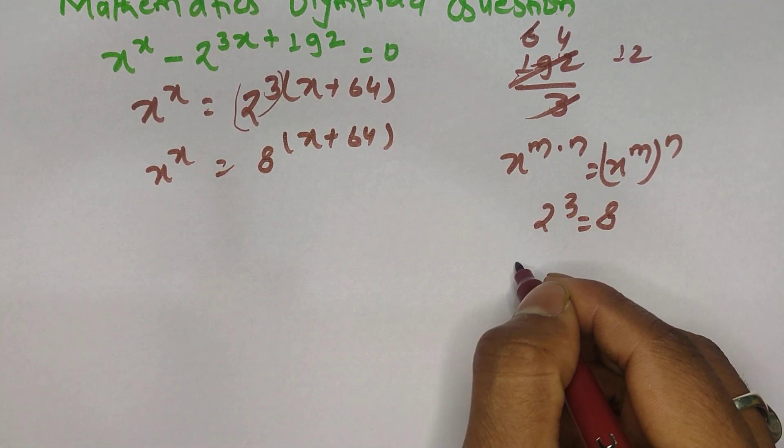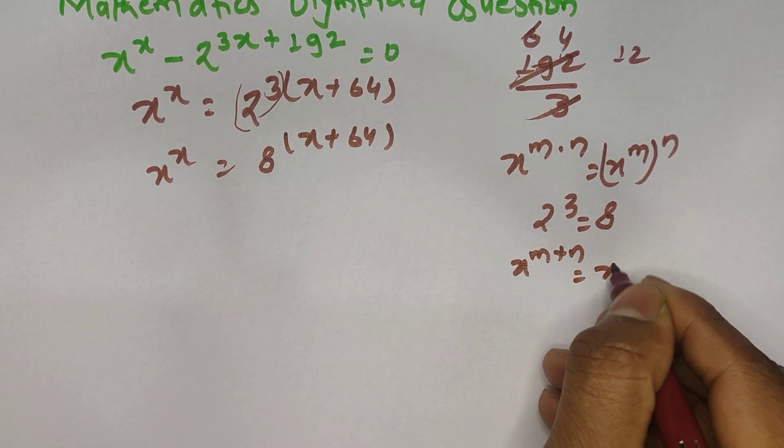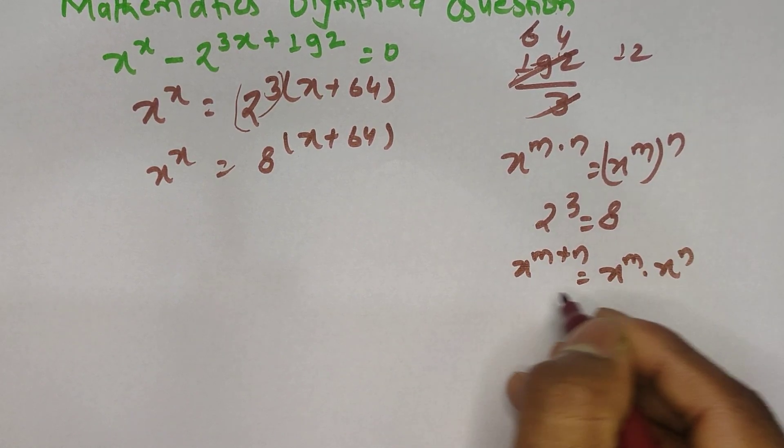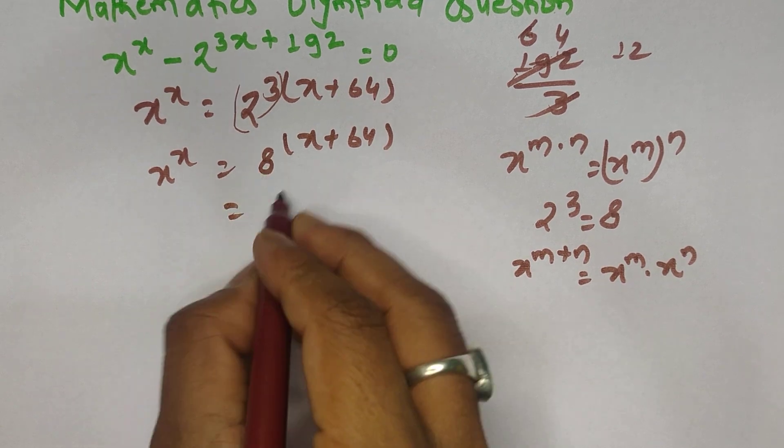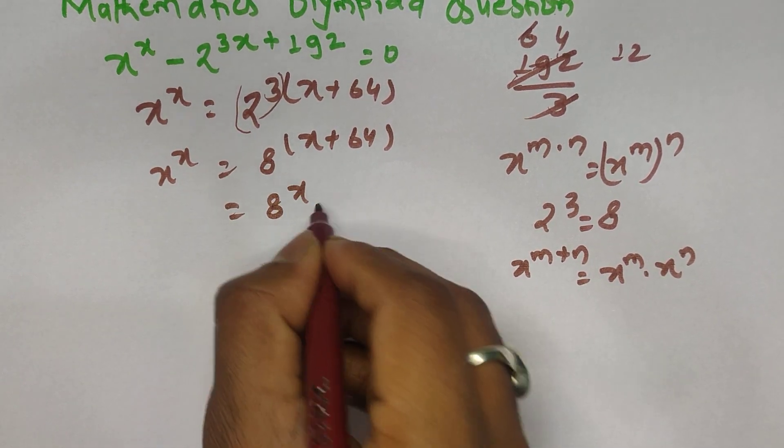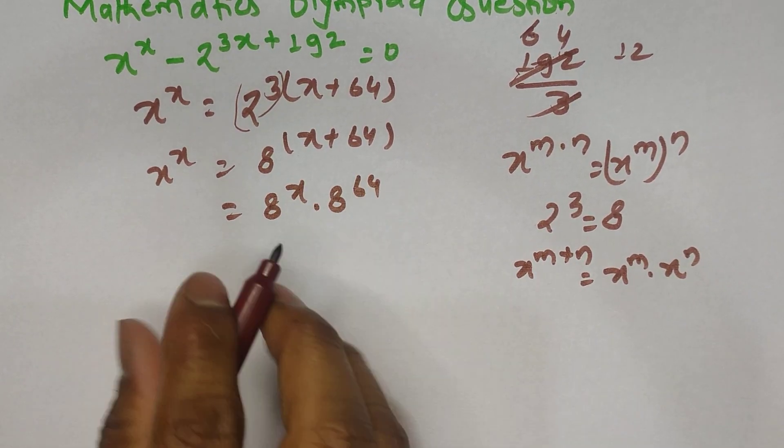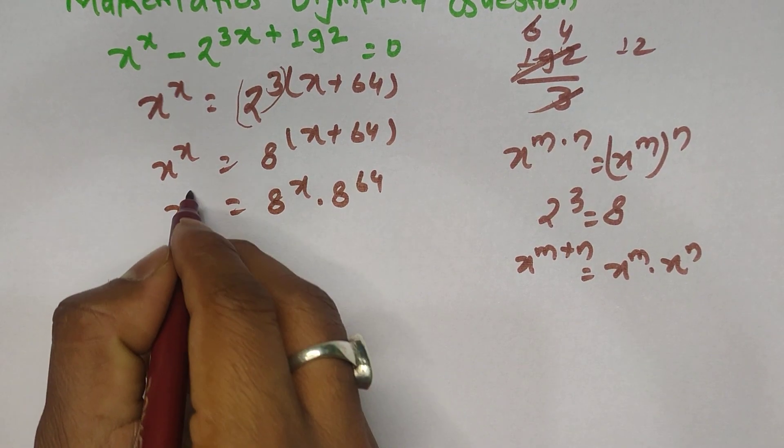From the rule of power, x power m plus n can be written as x power m times x power n. So let us write this as 8 power x times 8 power 64, and this one is the same.